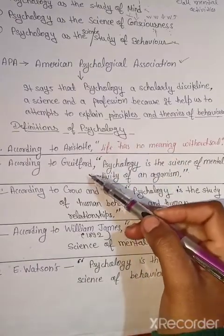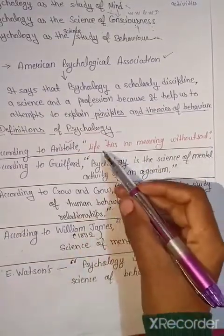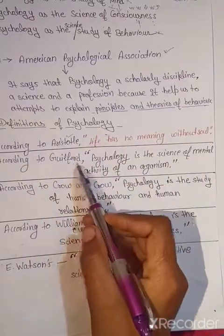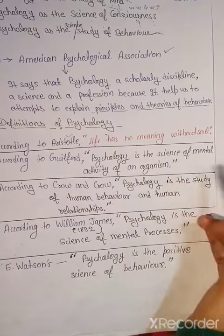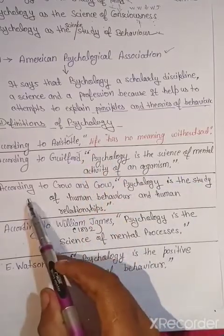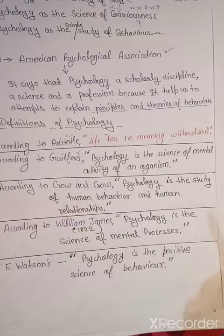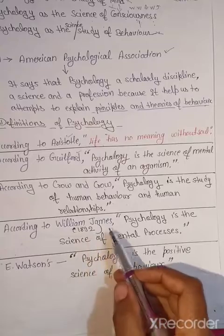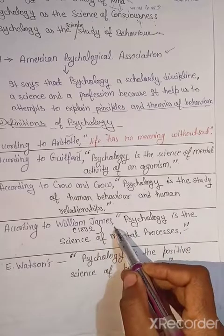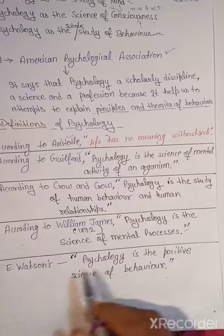अब देख लेते हैं some definitions related to psychology. Aristotle ने कहा — life has no meaning without soul. According to Gilford, psychology is a science of mental activity of an organism. According to Crow and Crow, psychology is the study of human behavior and human relationship. According to William James, psychology is the study of mental processes. And Watson ने कहा कि psychology is the positive science of behavior.